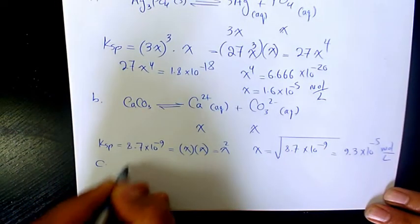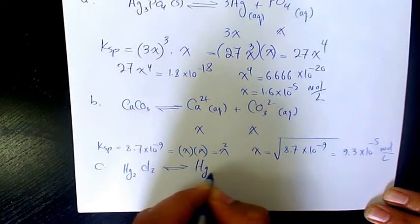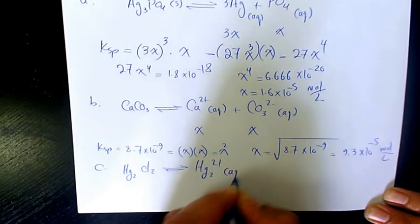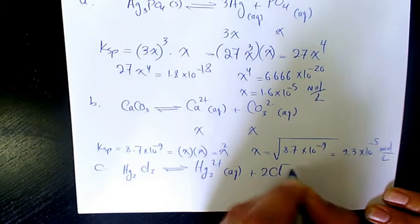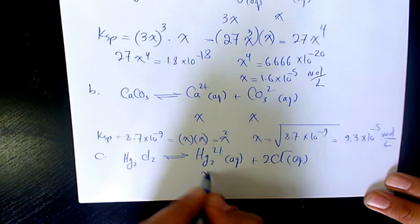So Part C is going to be HG2Cl2. Dissolves and produces HG2 2 plus, plus 2Cl minus. Which is going to produce X and 2X.